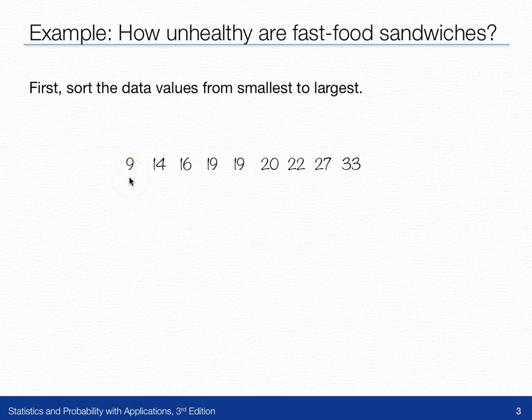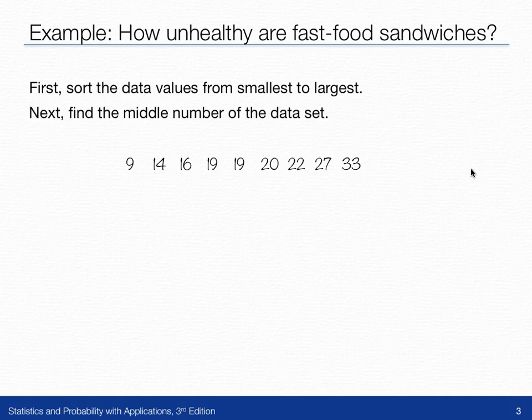Nine is the lowest, 33 is the highest, and we have everything else sorted in order. The median is the middle number in the data set. One way to find it is to knock off the first and last number, then the next lowest and highest number, and keep working your way in until you get to the middle.